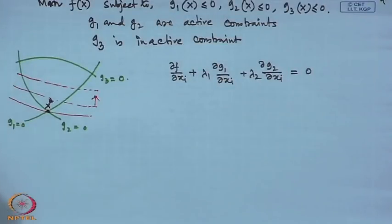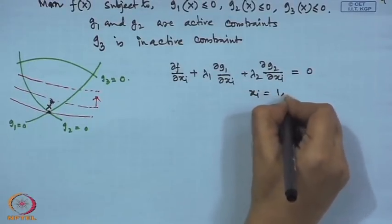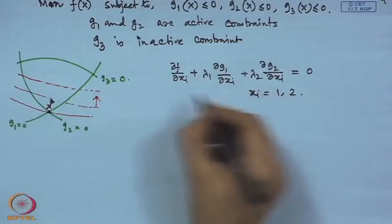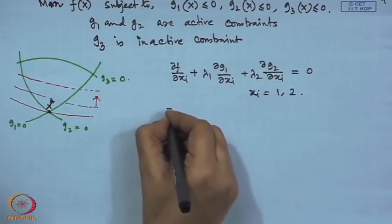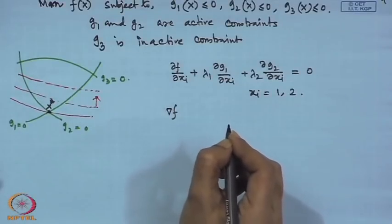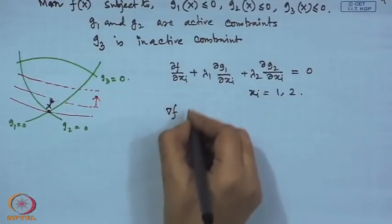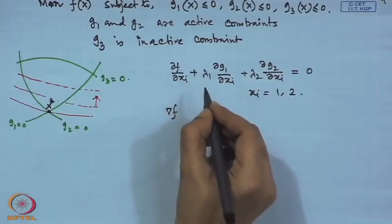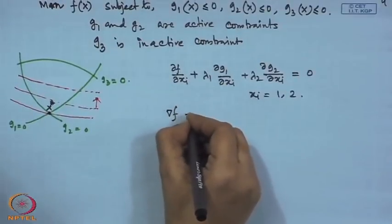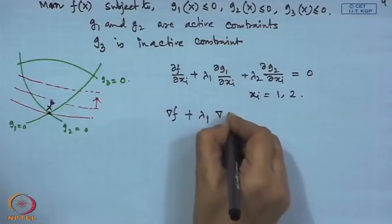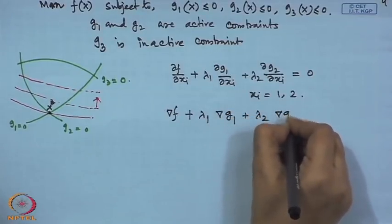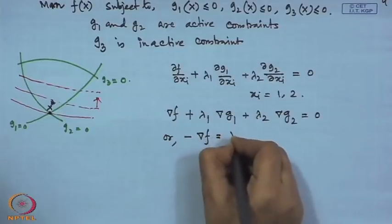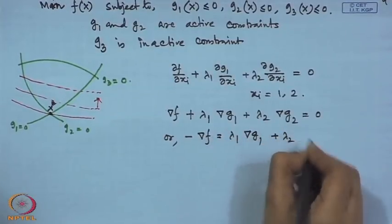With i = 1 and 2 (two decision variables), combining both equations gives: ∇f + λ_1 ∇g_1 + λ_2 ∇g_2 = 0, or equivalently: −∇f = λ_1 ∇g_1 + λ_2 ∇g_2.